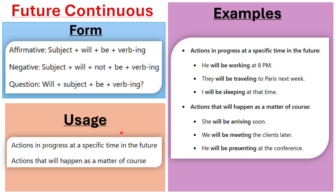Let's start with the form. In the affirmative we have: subject + will + be + verb-ing. Whenever you see the continuous, you add -ing to the verb. In the negative, we have: subject + will + not + be + verb-ing — just attach 'not' to the auxiliary verb. In the question, we swap 'will' to the beginning, then subject + be + verb-ing.